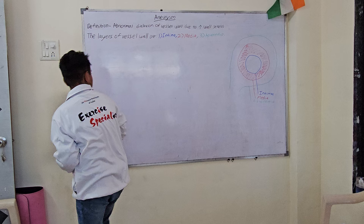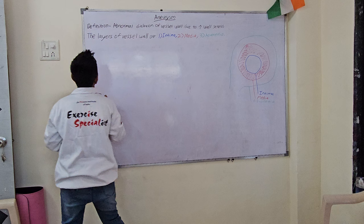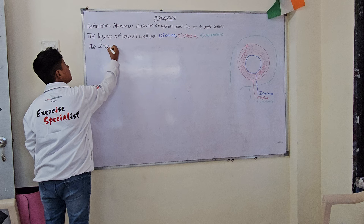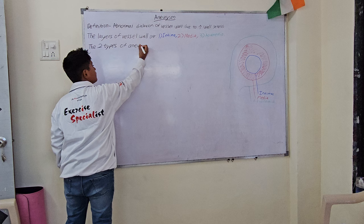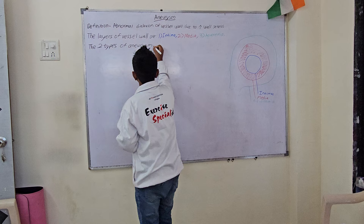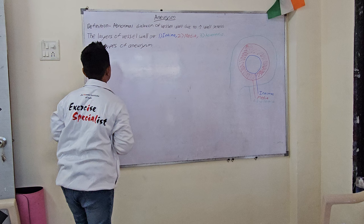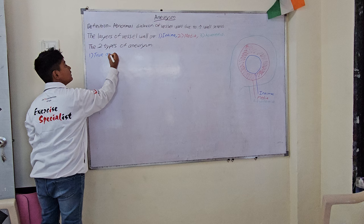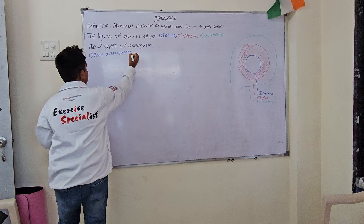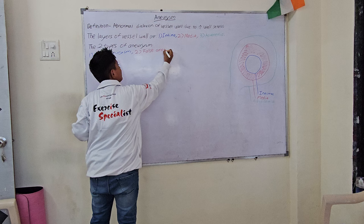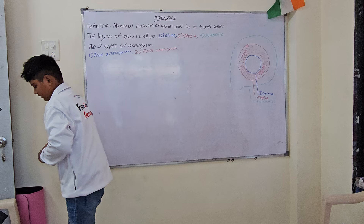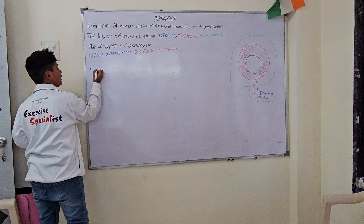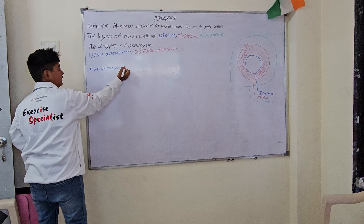Now let's see the two types of aneurysm. The two types of aneurysm are: first is True Aneurysm, and second is False Aneurysm. In True Aneurysm, all three layers expand.